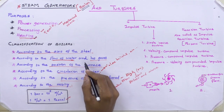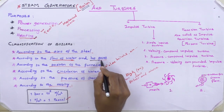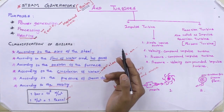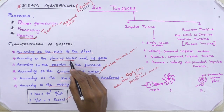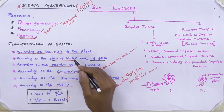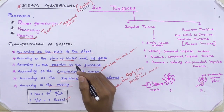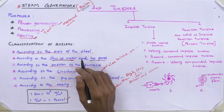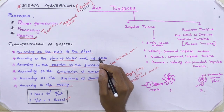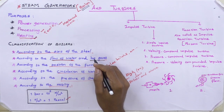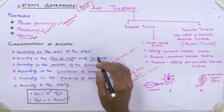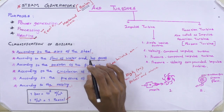Second, according to the flow of water or hot gases, there is the fire tube boiler and the water tube boiler. In the fire tube boiler, the hot gases flow inside the tube and water surrounds the tube. Examples include the Cochrane boiler, Lancashire boiler, and locomotive boiler. In the water tube boiler, the water is inside the tube and hot gases surround the tubes. Example: Babcock and Wilcox boiler.